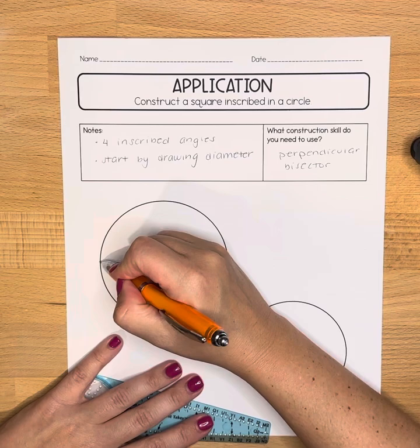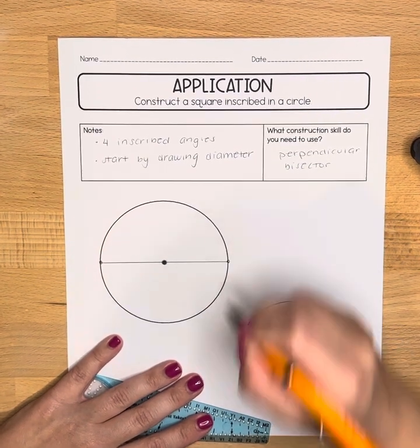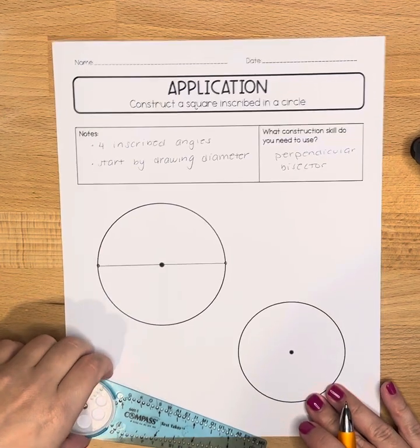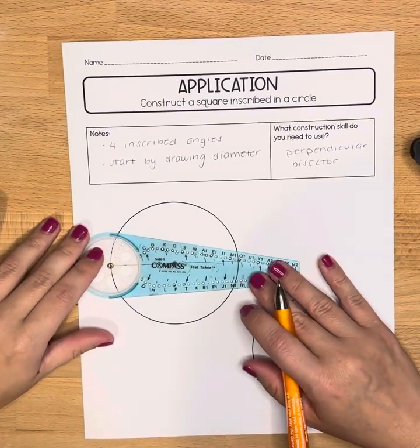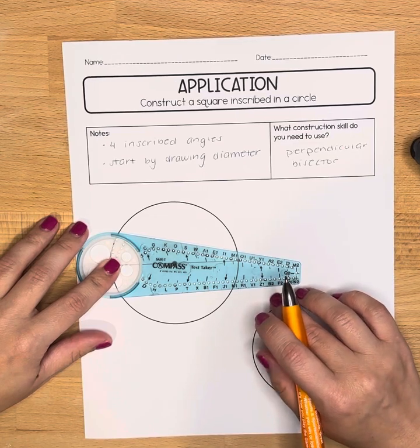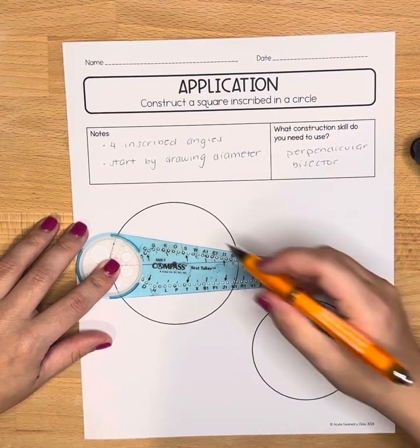Now I'm going to take those two endpoints and that's going to be two of the four vertices of the square. We have to find the other two and now I'm just going to do the perpendicular bisector construction with this line segment, basically with the diameter.